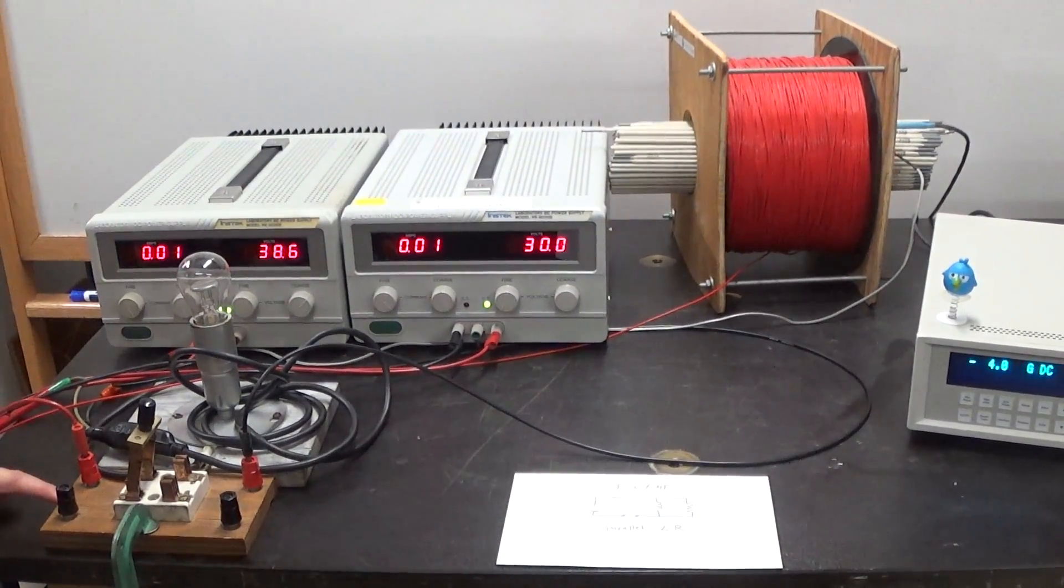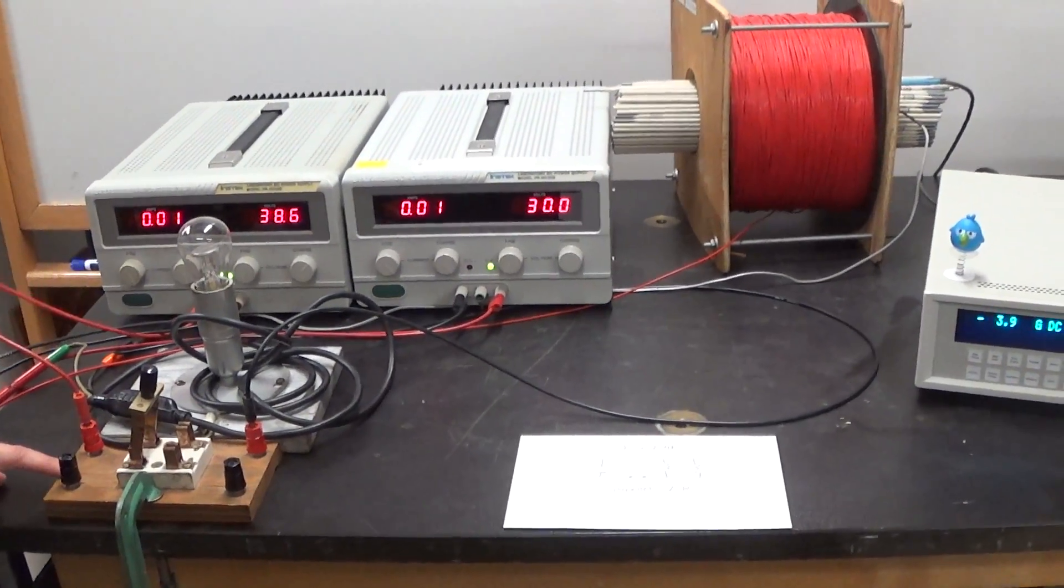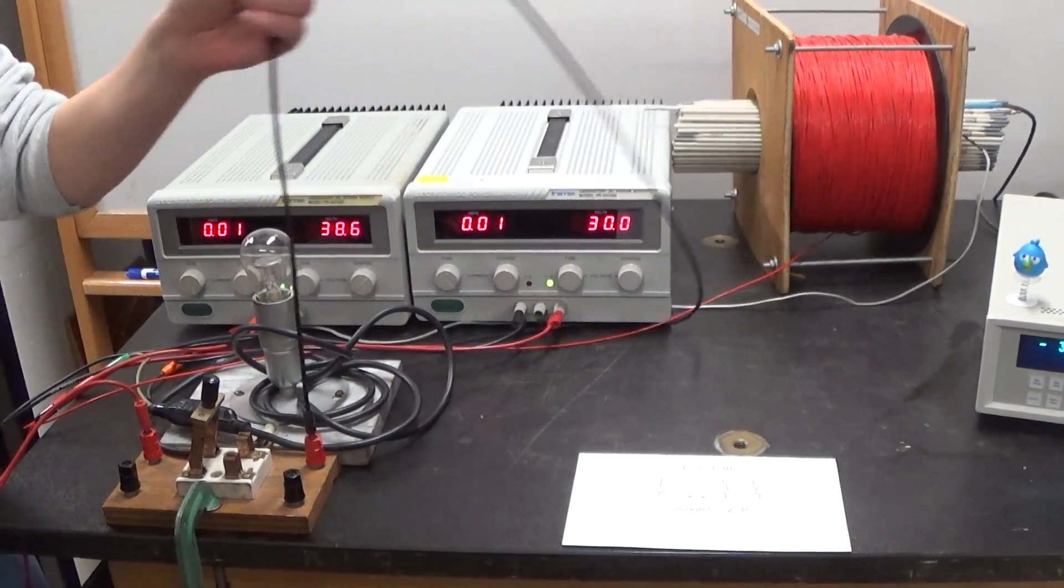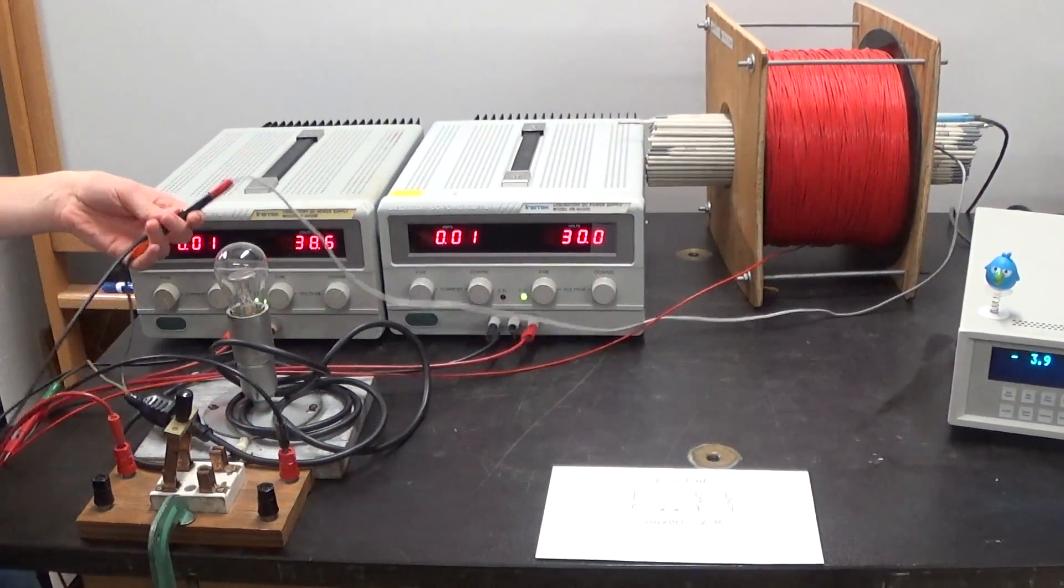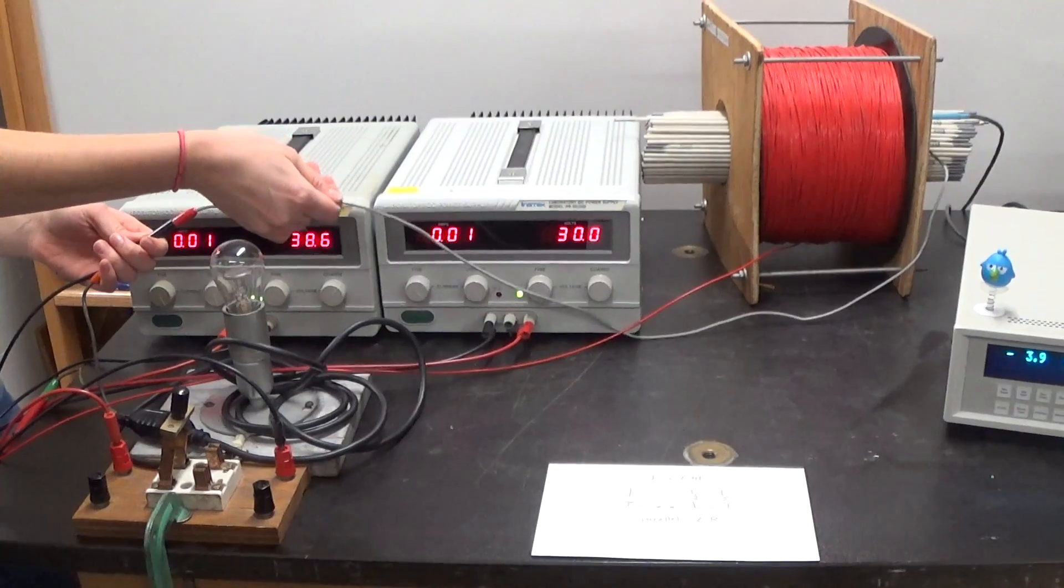This switch controls the flow of current through the circuit, and the switch is wired to the battery, the other end to the rest of the circuit, the light bulb, and the inductor.